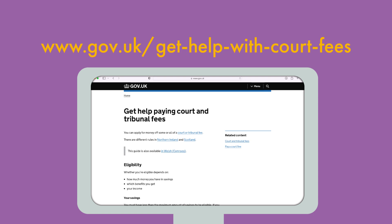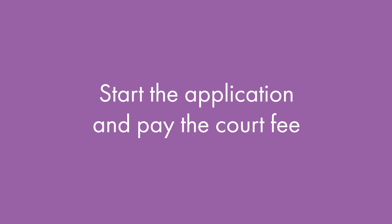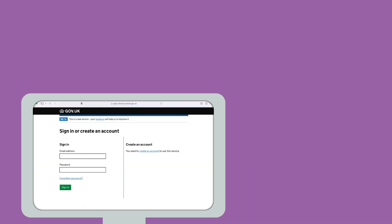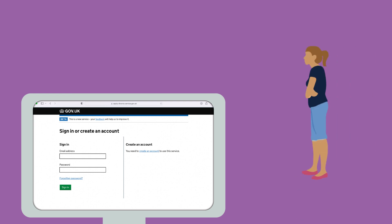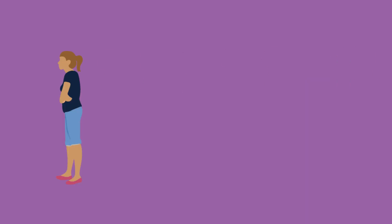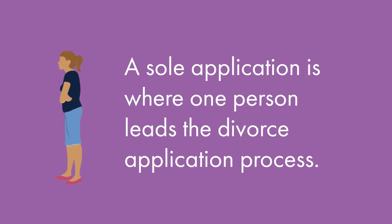The divorce process then follows the following stages. Stage 1: Start the application and pay the court fee. To start the application process for your divorce, you need to create an account on the government website. Once you have logged on, you will be able to start your divorce application. You can make a joint application with your husband or wife, or apply on your own as a sole applicant. A sole application is where one person leads the divorce application process — sometimes this is for practical reasons because one person doesn't agree to the divorce or you believe they will not cooperate.